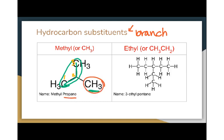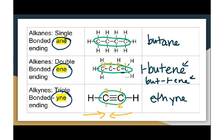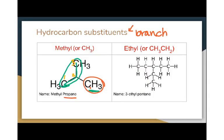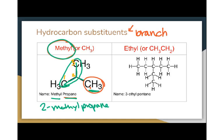Then this group here — I have one carbon. When there's nothing written, it means one. So if I go back and look at my one-carbon prefix, that's meth. And we always end branches with -yl. So that's methyl. Methylpropane is the name. You might see it as 2-methylpropane because this methyl group is on the second carbon. However, it's on the second carbon no matter which way you number, which is why there's no number in the formal name.